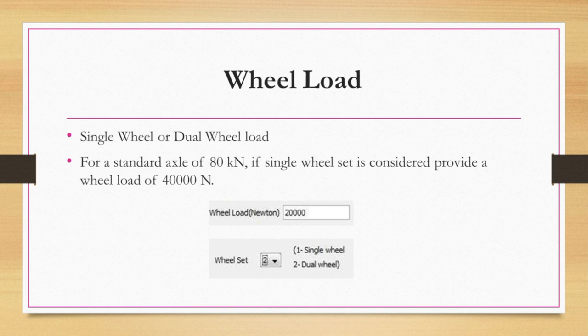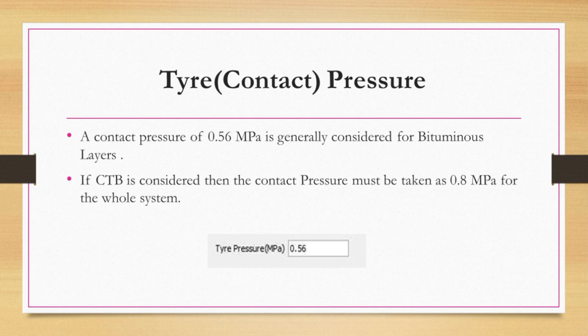If only one single wheelset is considered, then the wheel load must be provided as 40 kN, which is half of the 80 kN standard load. If dual wheelset is considered, then 20 kN is the wheel load, meaning each wheel carries 20 kN.